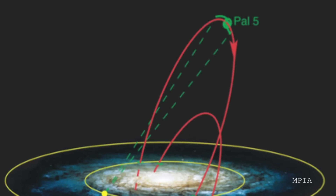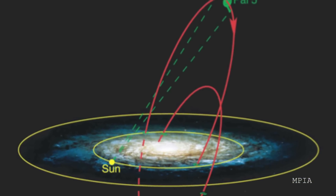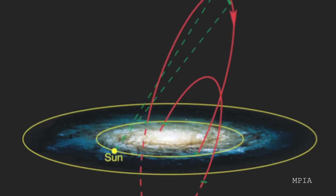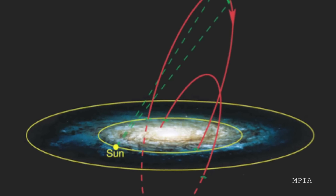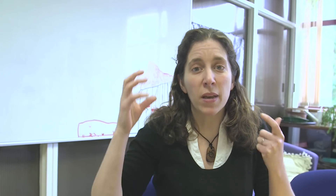You can see this in other globular clusters too. A famous example is Palomar 5, which is not part of the Messier catalog. In that case you can see even more extreme tidal streams of stars being stripped out of the globular cluster, both in front and behind it, because of its passage close through the disk of the galaxy.